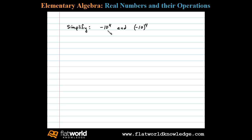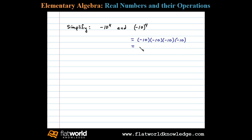Here we're asked to simplify negative 10 to the fourth power, and the quantity negative 10 to the fourth power. The parentheses indicate that negative 10 is the base, so we use negative 10 as a factor four times. The result of multiplying four negatives will be positive, and 10 times 10 times 10 times 10 is 10,000. So the result is positive 10,000.